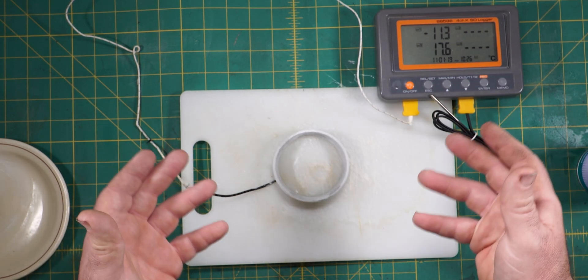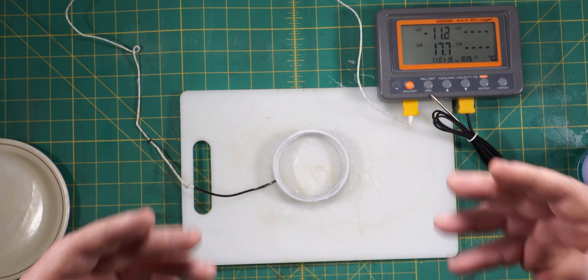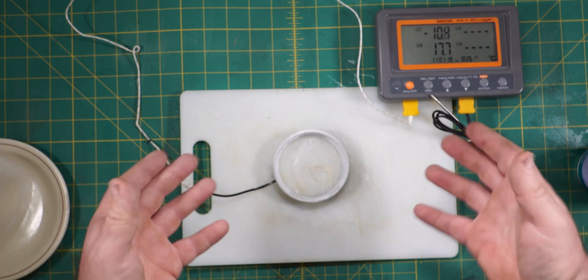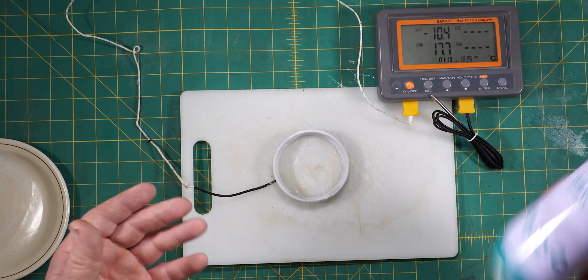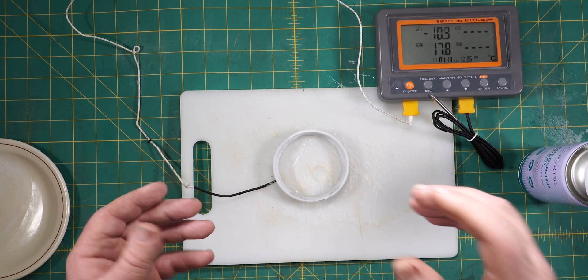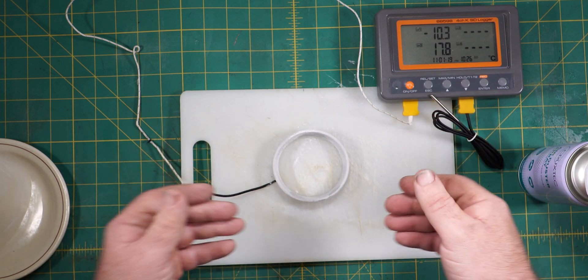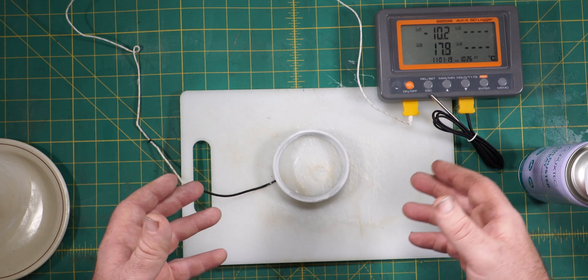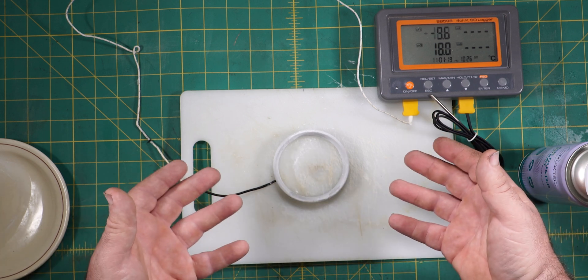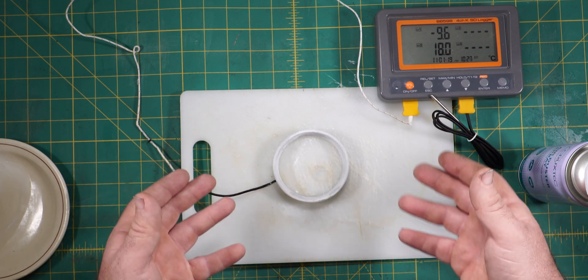This technique can also be great for getting rusty or stuck nuts off of bolts because you're causing a temperature difference between the bolt and the nut. And therefore it'll shift it around a little bit and that might be enough to loosen it up. It's like the opposite of heating up the nut in order to get it off.